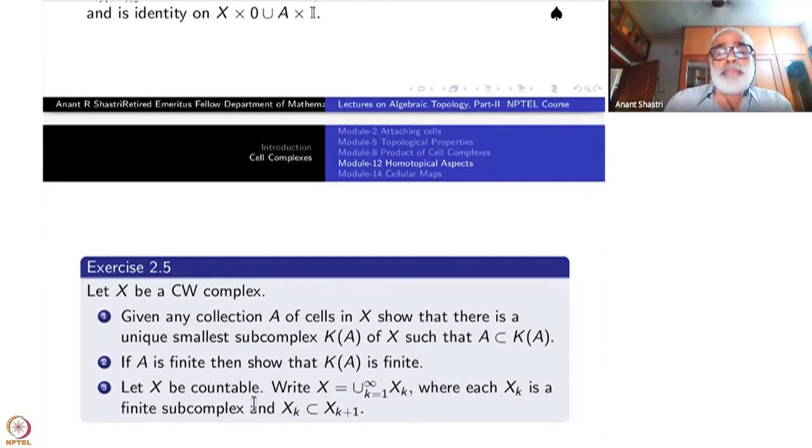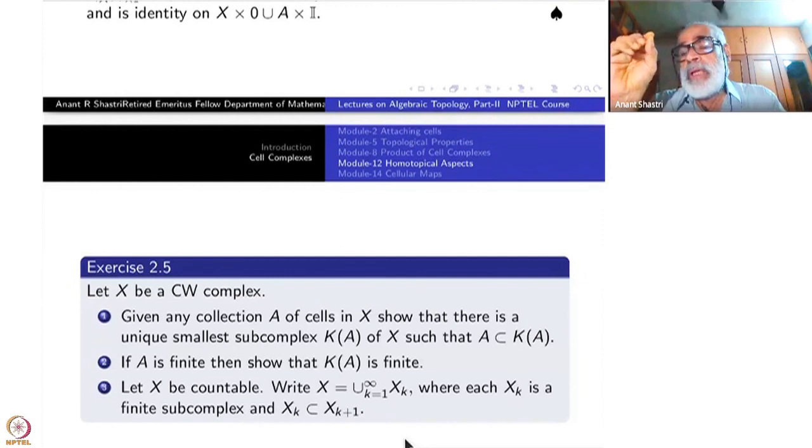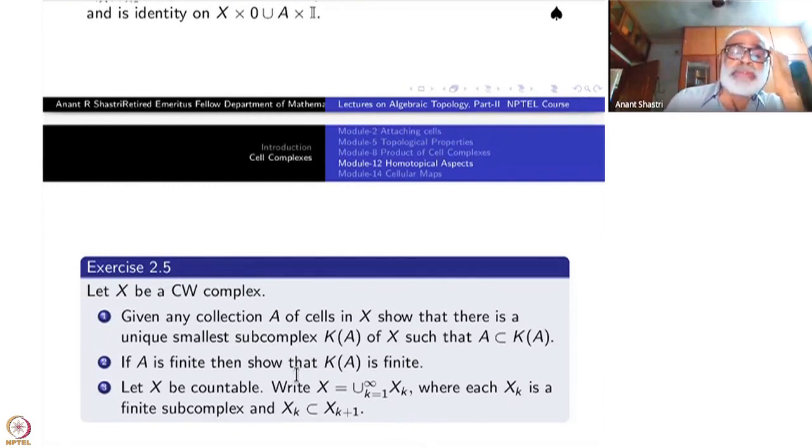Let X be countable. Write X as a union of an increasing sequence of subspaces X_k - this is not the k-skeleton now, by the way. X_k is a finite subcomplex - you have to write it as a union of finite subcomplexes. If you just take any collection of cells, it will not be a subcomplex. That's why the first two parts are there. Together, part three is the one I've actually used, and I've indicated that, but now we have to write a rigorous proof.